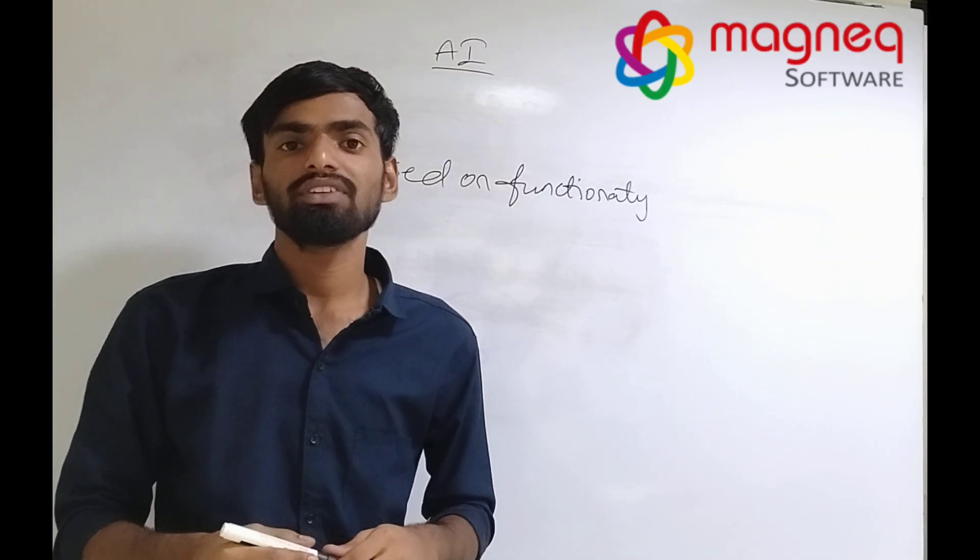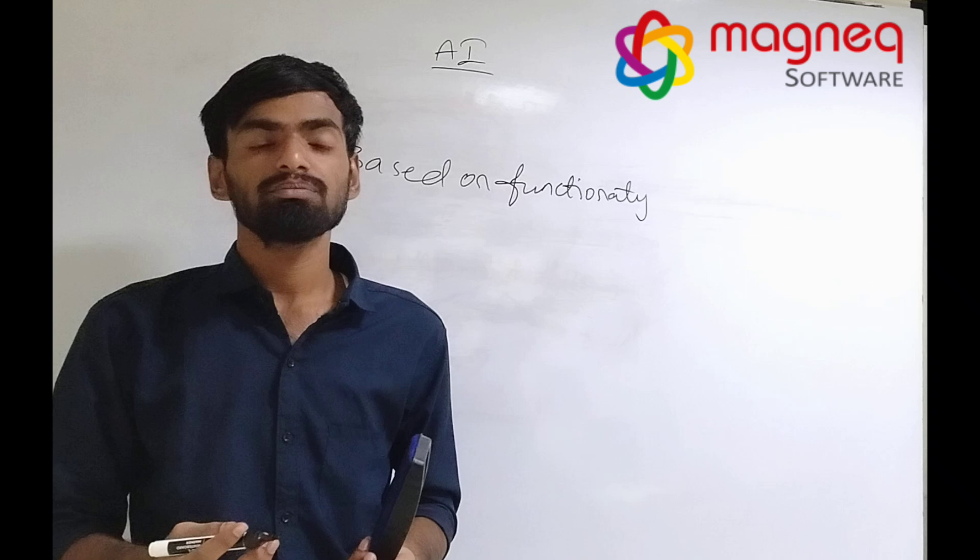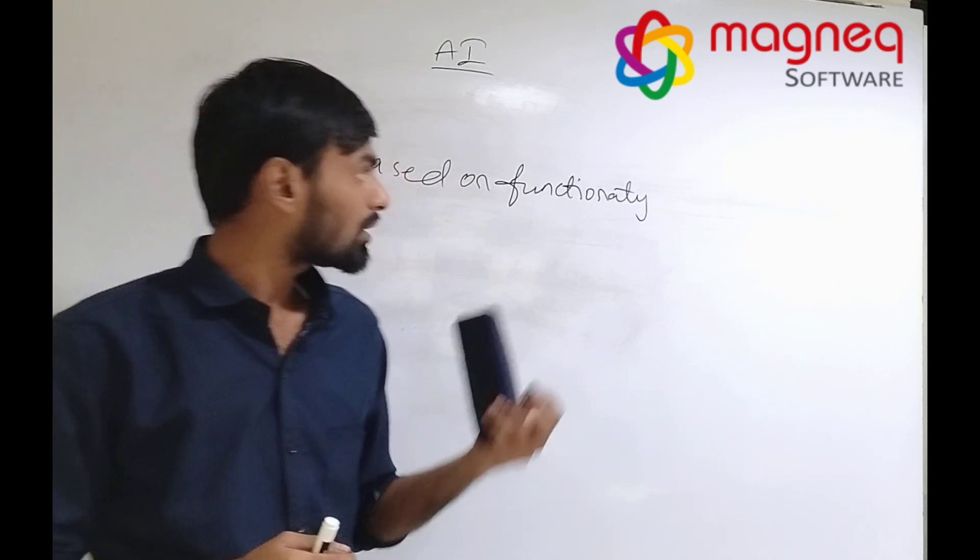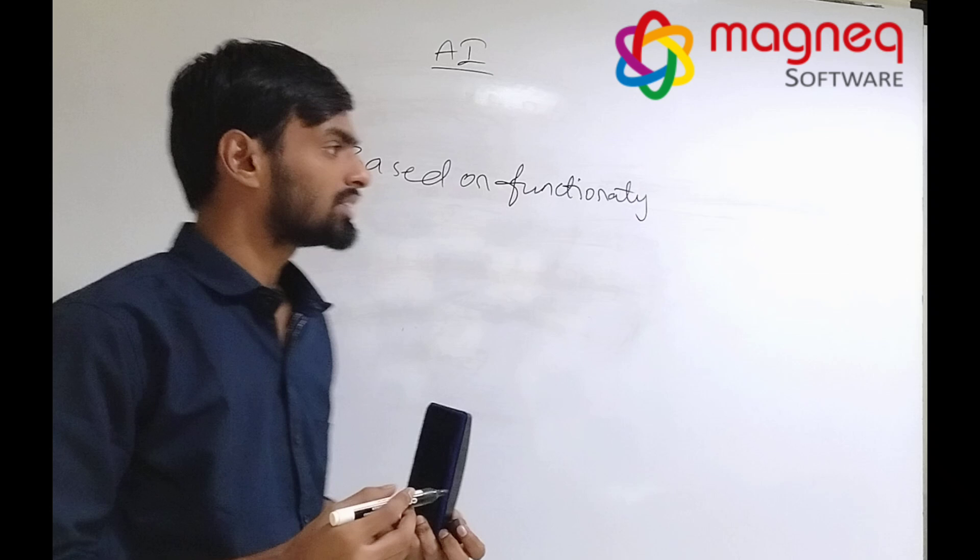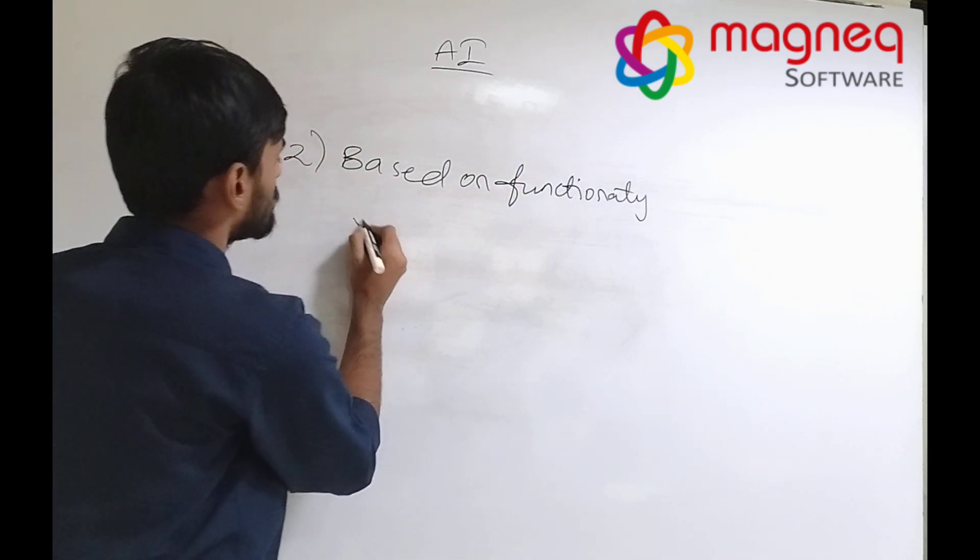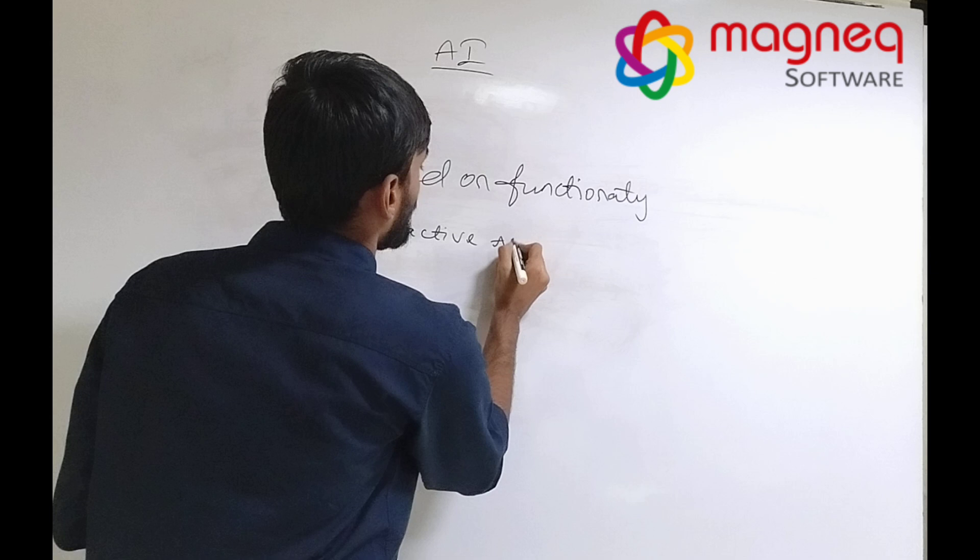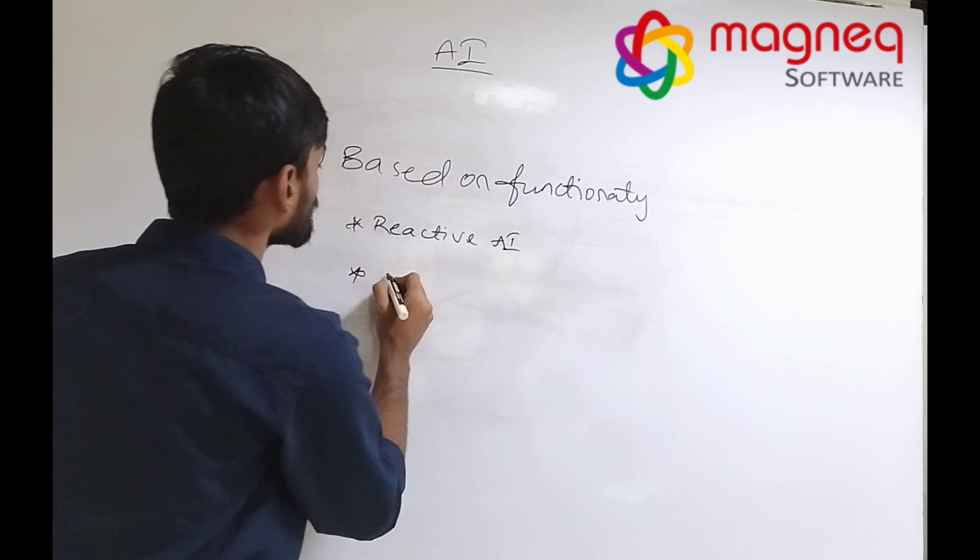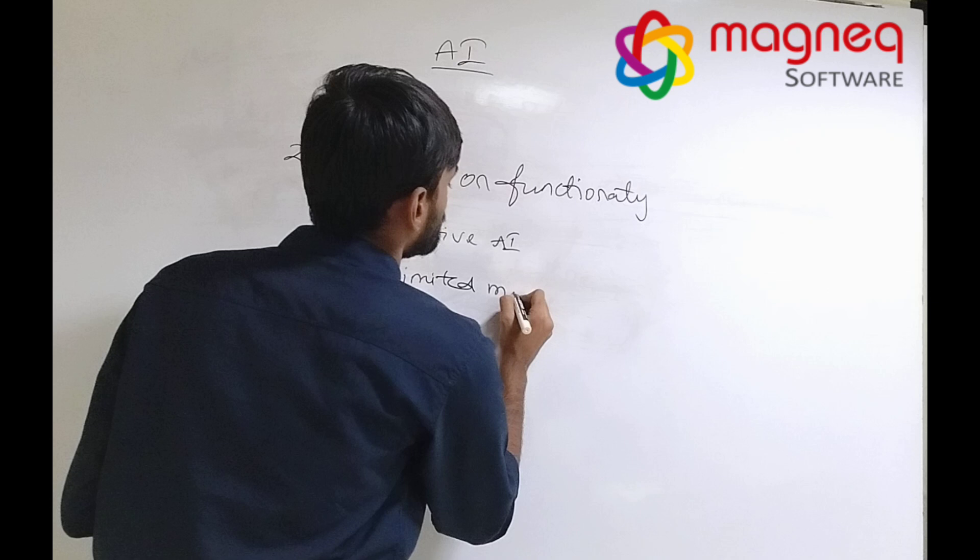Hello everyone, myself. In previous video I uploaded what is mean by types of AI based on capability. Now in this video we explain about based on functionality. In functionality there are also three types: reactive AI, limited memory, and self-aware.